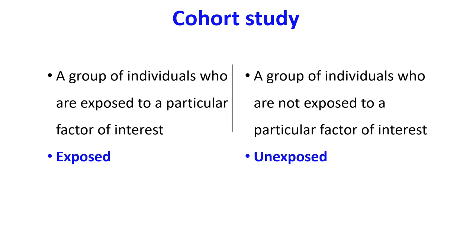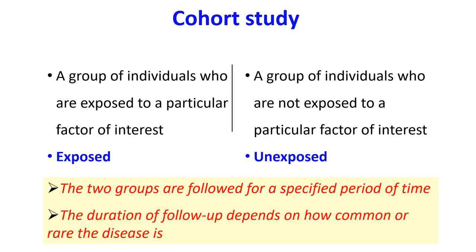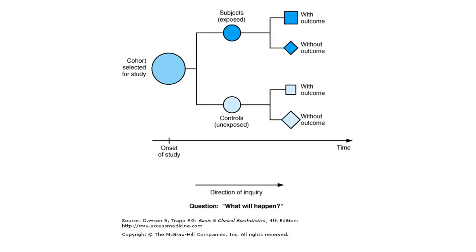We also identify another group not exposed to the factor of interest. So we identify a cohort and divide them into exposed and unexposed groups. Then we follow them for a period of time to see whether they develop the outcome of interest. How long to follow them depends on the nature and commonness of the disease.